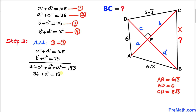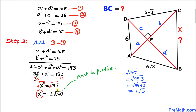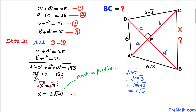Substituting, we get 36 + x² = 183. Subtracting 36 from both sides: x² = 147. Taking the square root of both sides: x = √147. Since x represents a side length it must be positive, and √147 simplifies to 7√3.